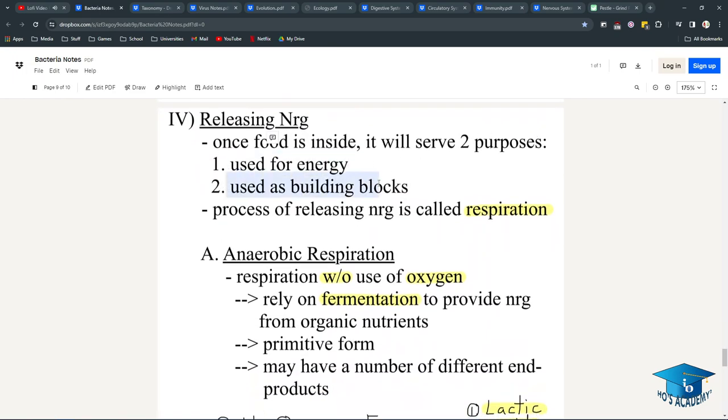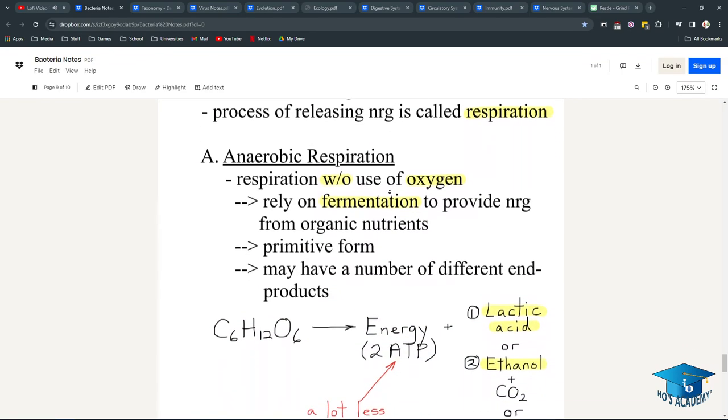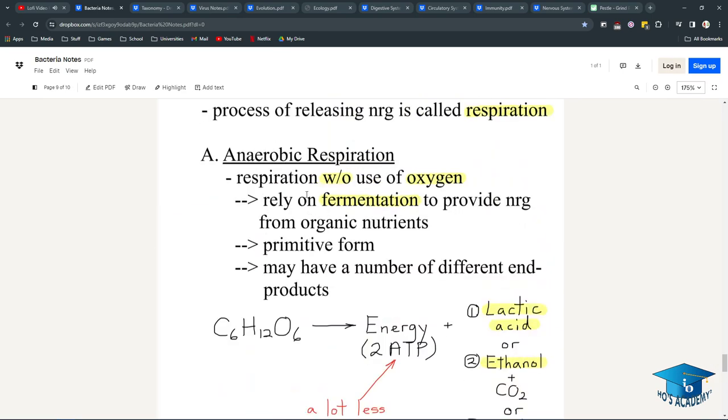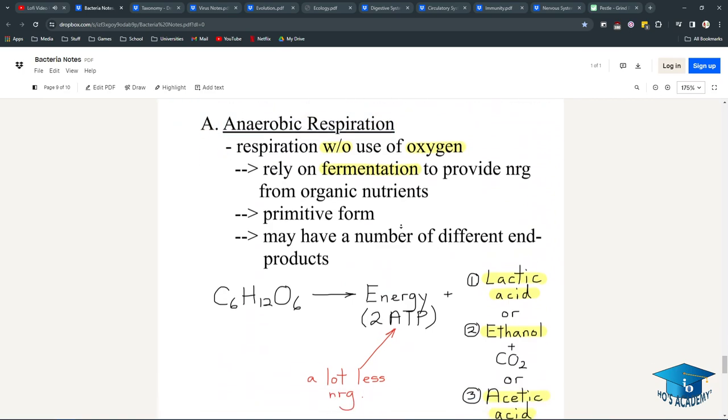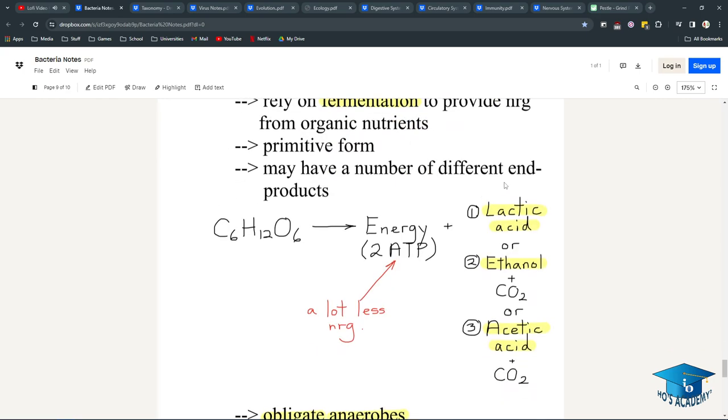The process of releasing energy is called respiration. There's anaerobic respiration and aerobic respiration. Anaerobic means respiration without the use of oxygen, so they rely on fermentation to provide energy from organic nutrients. It's more primitive, and there's a bunch of different end products because they're not using oxygen.